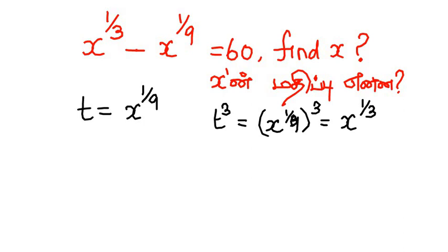With t equals x^(1/9), after substituting and taking to the power, we get t³ minus t equals 60.